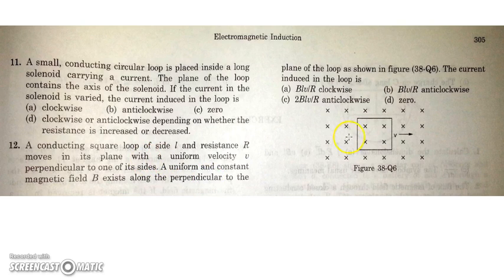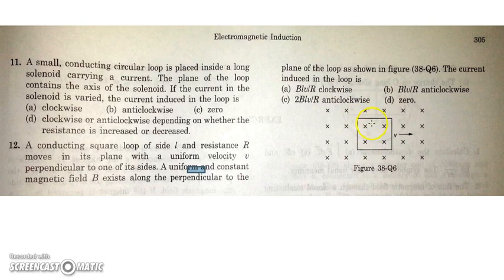In the last question, a square loop is moving completely inside a magnetic field region. Since there is no change in flux — the loop is completely inside the magnetic field and remains so — there will be no induced EMF and hence no induced current. Thank you.